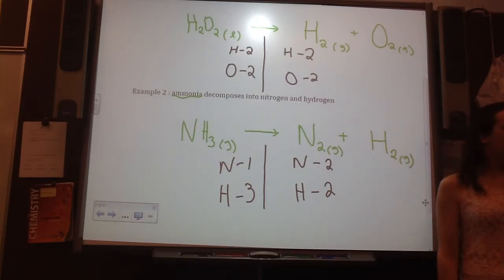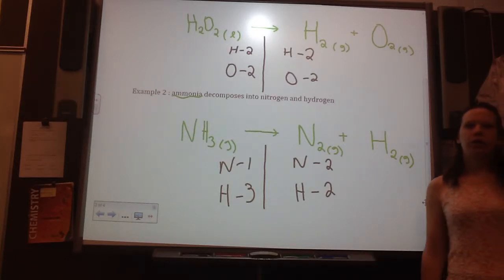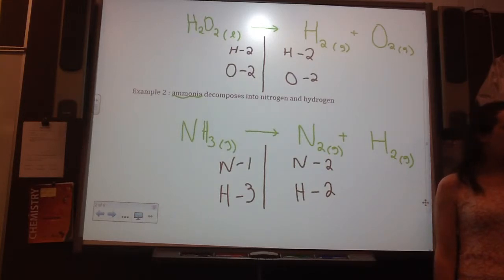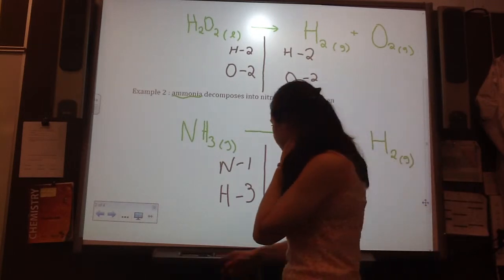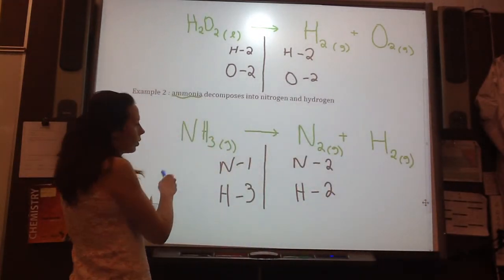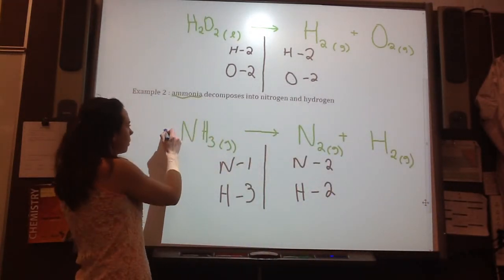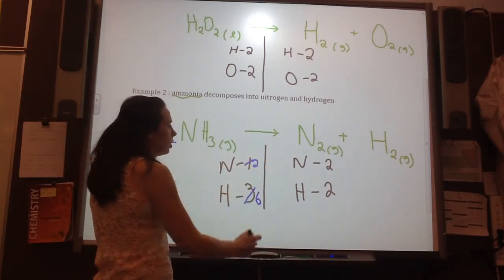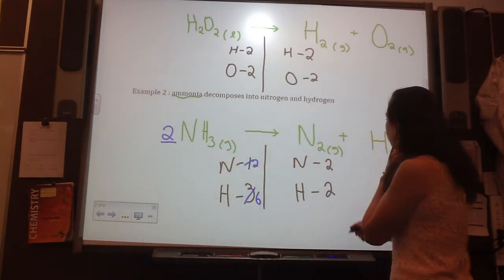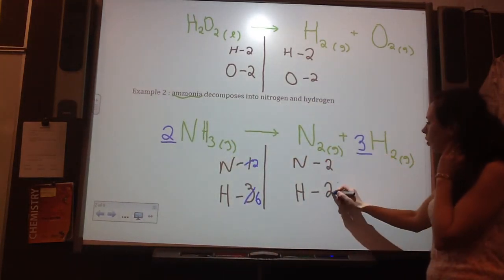So, what you want to think, and a lot of you kind of got to this place yesterday where you thought, okay, what do I do here? What you want to think is you look for the lowest common denominator between those two numbers. So, what's the lowest common denominator between three and two? Six. So, you want to get H to six and hydrogen to six. So, what would I have to do to get this one to six? Put a two in front. So, this one becomes a six. This one now becomes a two. And put a three here for H.